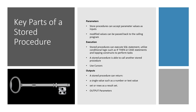The third major part of a stored procedure is the output, or the results returned from the stored procedure. A stored procedure can return a single value such as a number or a text value, it can return a row or a result set, or it can return values as part of output parameters.